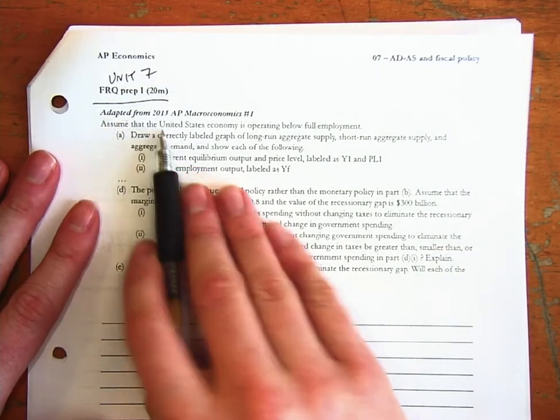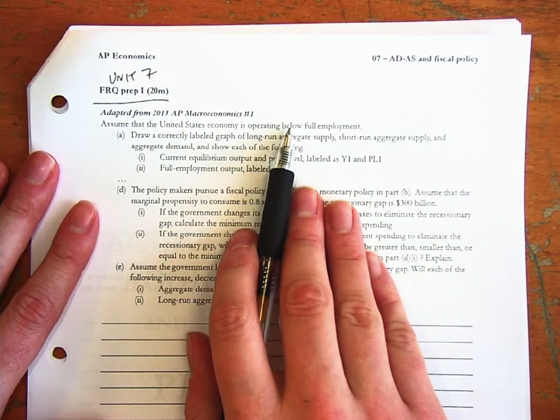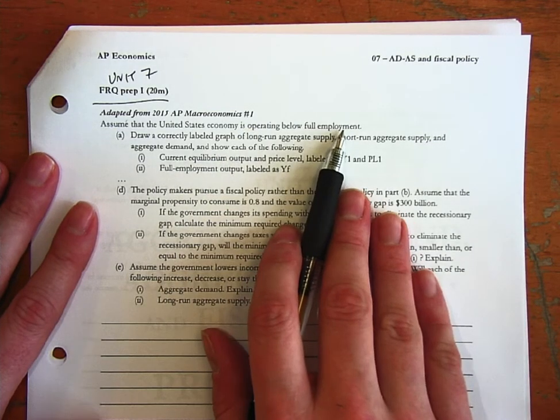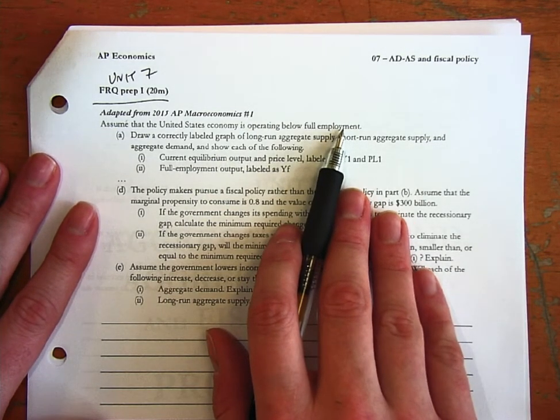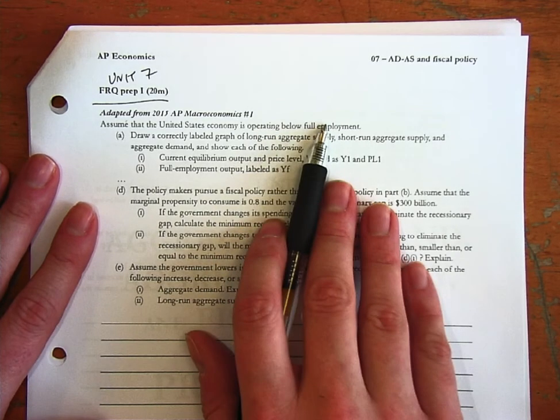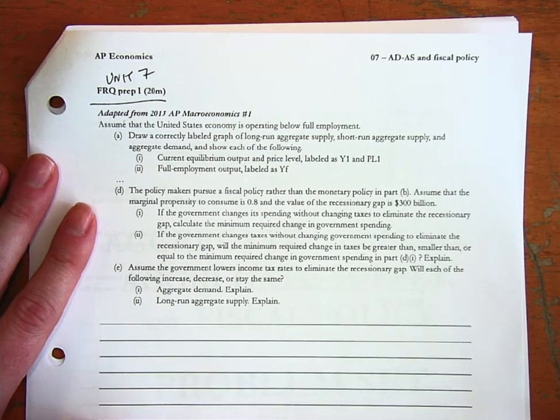First part, assume that the United States economy is operating below full employment. This is really critical that we actually read the questions. I know you've heard me harp on this before, but if you don't read that part and just dive in and start drawing it in equilibrium, you'll get that point wrong.